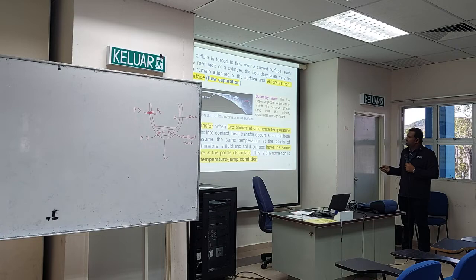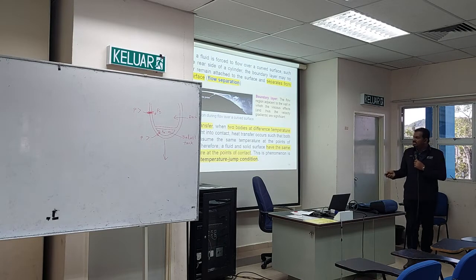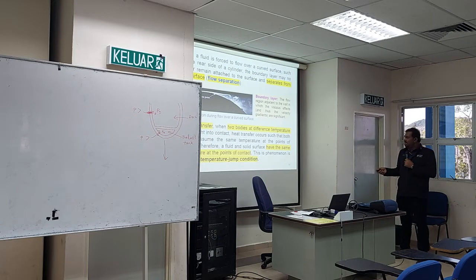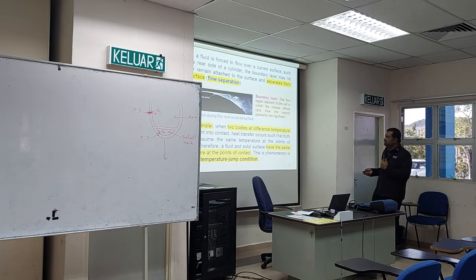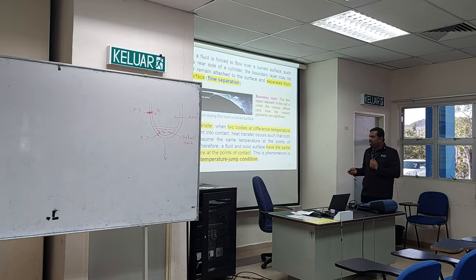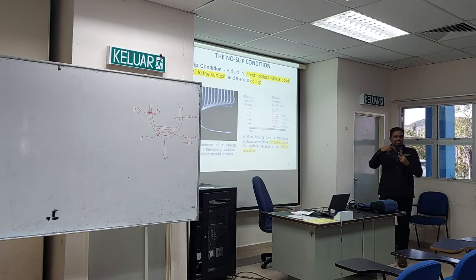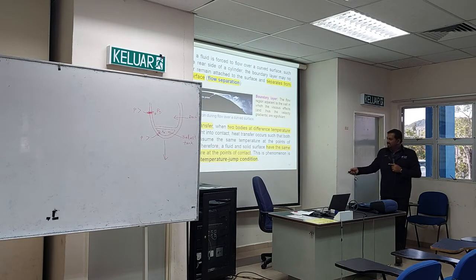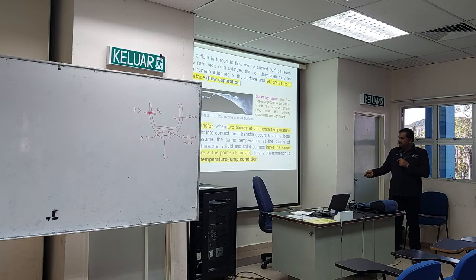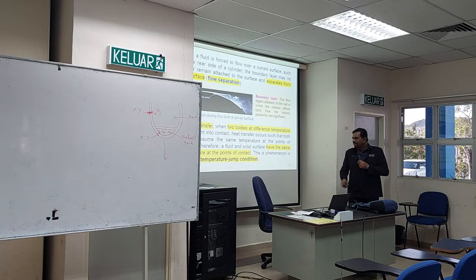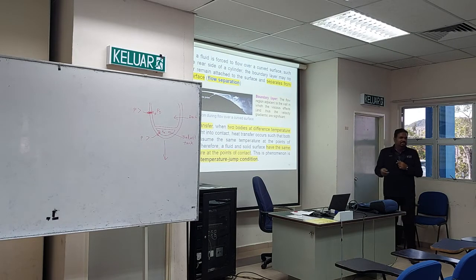In heat transfer, when two bodies at different temperatures come into contact, heat transfer occurs until both bodies assume the same temperature at the point of contact. So if the plate is 70°C and the flow is 25°C, the contact point will reach the same temperature. We call that the no-temperature-jump condition.